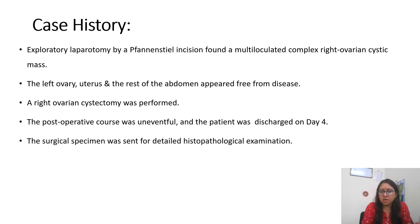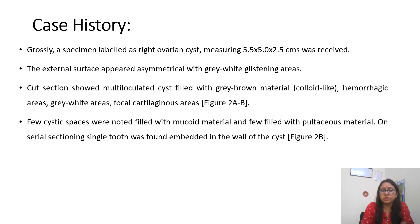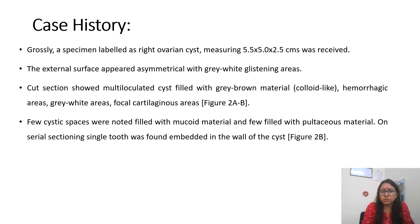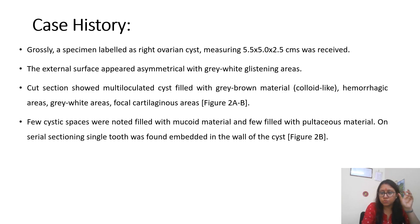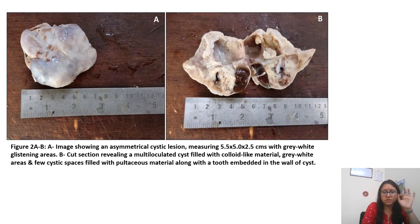After surgery, histopathological examination was done and the ovarian cystectomy specimen was sent to the pathology department. Grossly, we received a mass labeled as right ovarian cyst, measuring 5 × 5 × 2 cm. The external surface was slightly asymmetrical with gray-white glistening areas, and focal cartilage areas were also seen. A few cystic spaces were noted, filled with mucinoid and sebaceous material. On serial sectioning, a single tooth was also found embedded in the wall of the cyst.